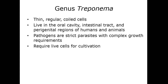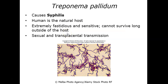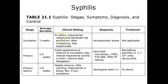We're going to start with the first group, the syphilis family — the treponema. These are pathogens that are strict parasites requiring very complex growth conditions. Syphilis specifically requires humans as the natural host. It is extremely fastidious and doesn't survive well outside of the host for a long period of time. Syphilis has not only a sexual transmission, but can also be transplacental as well.